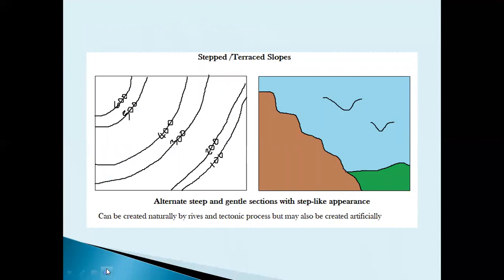We begin with our stepped or terraced slope. On the map, notice that at certain points the contour lines are far apart and at certain points they are close together. Where the contour lines are far apart, the land is gentle; where they are close together, the land is steep. So along this slope we have alternating areas of gentle sections, then steep sections, then gentle again, then steep, and it continues like that along the slope.